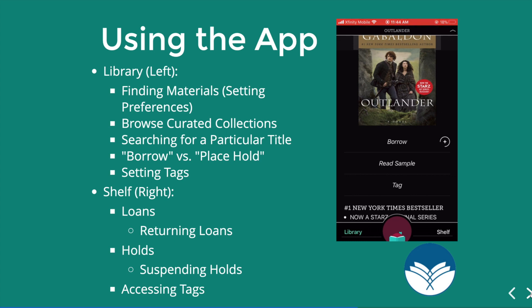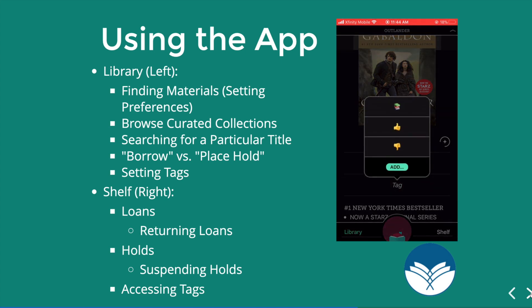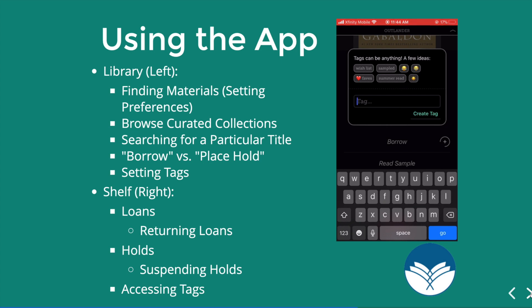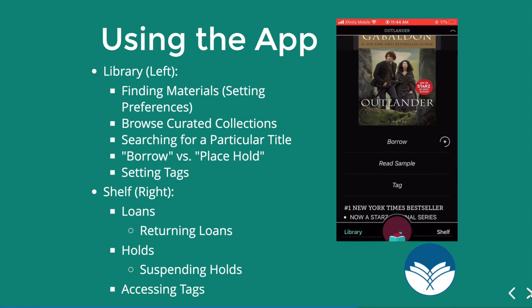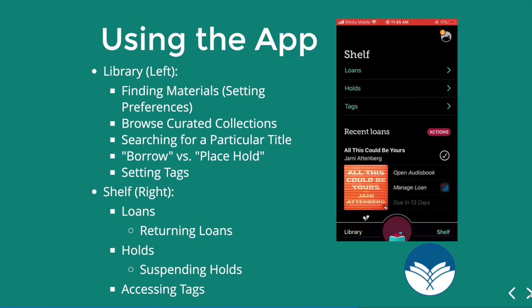Another thing you can do is set a tag in the library function. When you set a tag you hit tag and you can use the little books option, a thumbs up meaning you liked it, or a thumbs down. You can also add a custom tag for something you personally want to label your resources as, and then create the tag. Once you've done that, you can see the tagged item in your shelf.